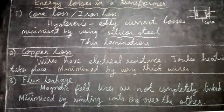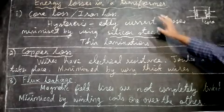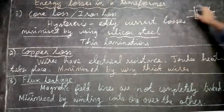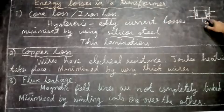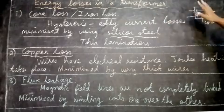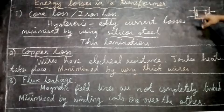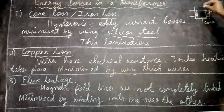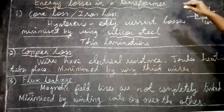Let us study the various energy losses in a transformer. The first one is core loss or iron loss. This is a transformer and this is the core of the transformer. A magnetic field passes inside this core. The primary produces a magnetic field.